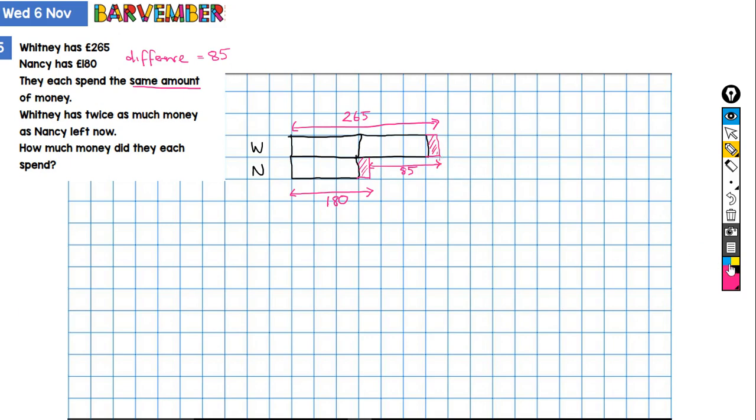So I'll grab a different color here. If we take the same amount away here and the same amount away here, let's bring this line down. So if we take the same amount, the difference between these two is also going to be 85. Does that make sense?